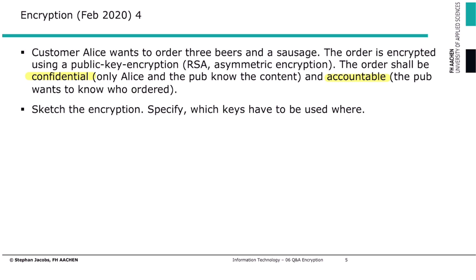We have to combine the two approaches. Let's think about a situation where Alice and Bob, who are working in this pub, both have a pair of keys. So we have Alice's private key, Bob's private key, Alice's public key, and Bob's public key.